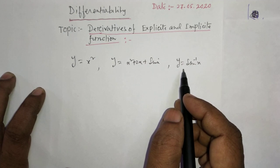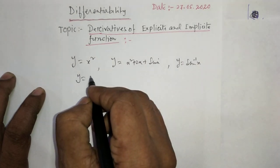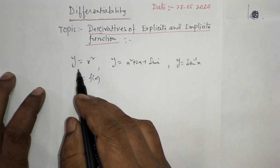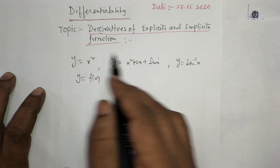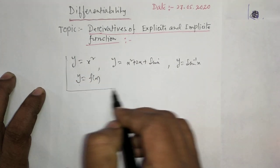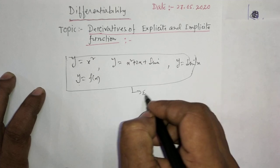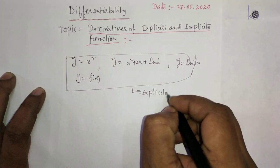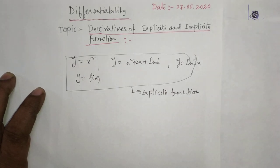Here, y is directly expressed in terms of x. That means y can be expressed as y = f(x) — y is a function of x. When y can be expressed in terms of x as a dependent variable, then such a function is called an explicit function.